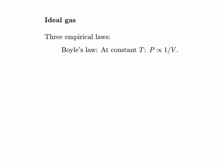The first is Boyle's Law, discovered by Robert Boyle in the 1660s. He found that if you hold the temperature of a gas constant, then its pressure is proportional to one over its volume — pressure and volume are inversely proportional. If you double the pressure, you'll divide the volume in half.